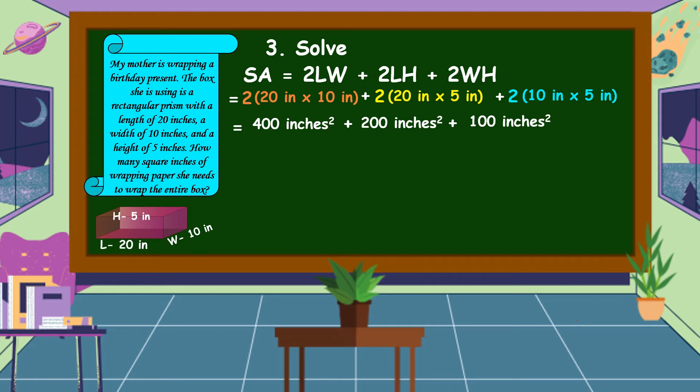So, let's add 400 inches square. This is the surface area of a rectangular prism.